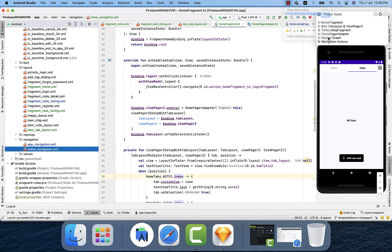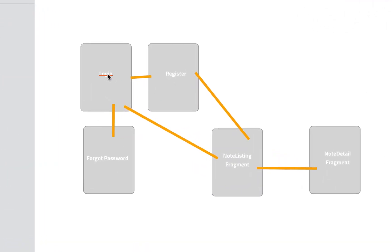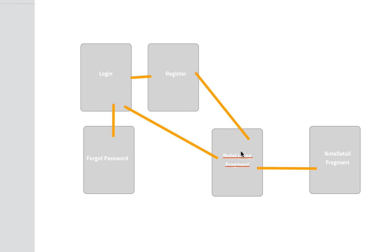The fifth step is the nested graph. In the current navigation graph we have five fragments: login, register, and forget password. Login has three actions — from login to register, from login to note listing fragment, and from login to forget password. Register has one action from register to note listing. Note listing fragment has one action from note listing to note detail fragment. That is our current navigation graph.